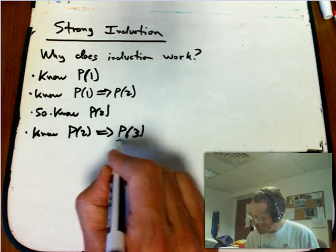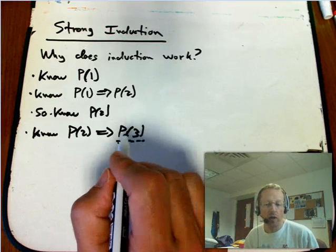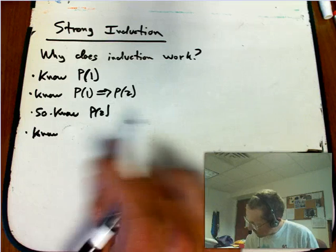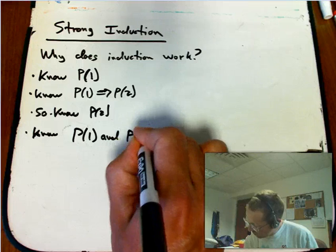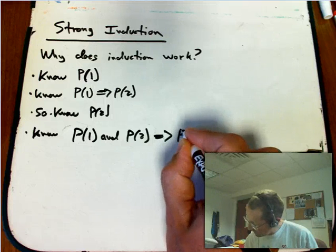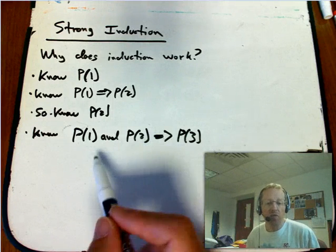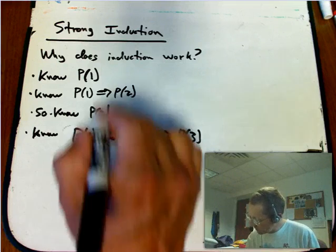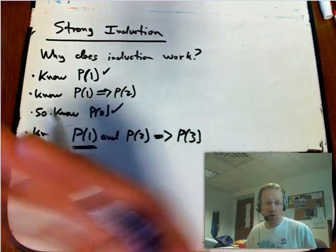But let's suppose that P(3) is a little bit harder to actually prove and I need a little bit more help. I want to say, you know what, can you spot me P(1) as well? So in other words, given both P(1) and P(2), can I prove P(3)? That should be a little easier. I'm allowed to assume P(1) and P(2), and maybe with that much help I can get to P(3). Well, is that going to be okay? Well, yeah, because I do know P(1) and I do know P(2). There's no harm in saying, can you spot me P(1)? Because you already have. We already know that's true.